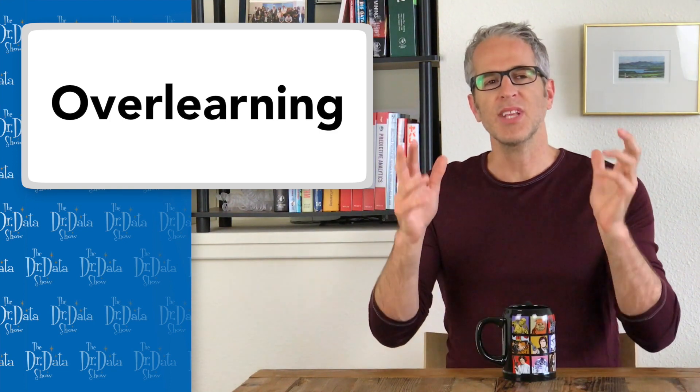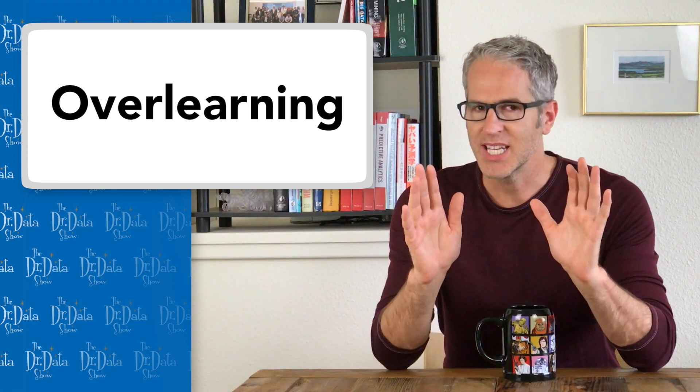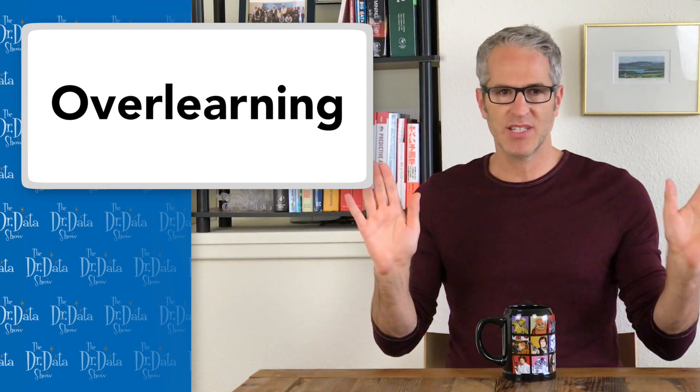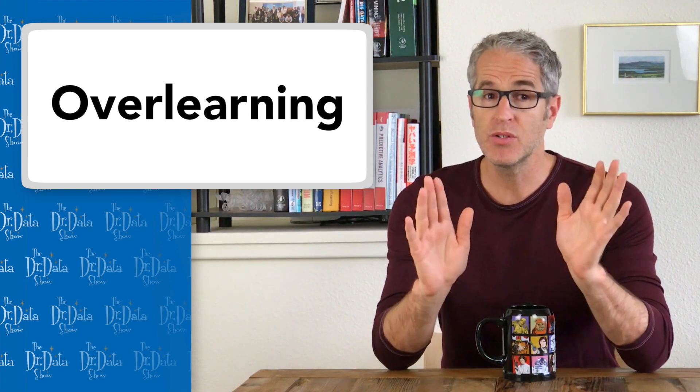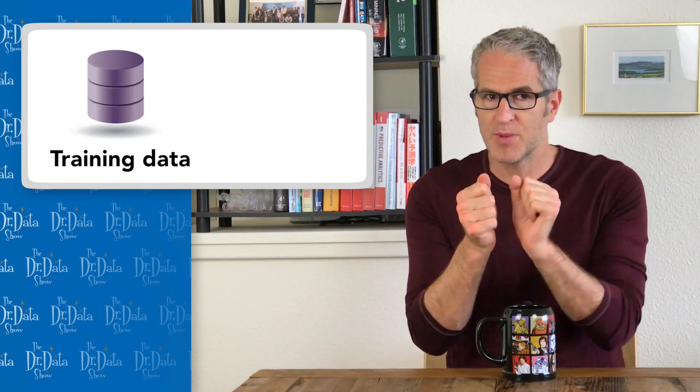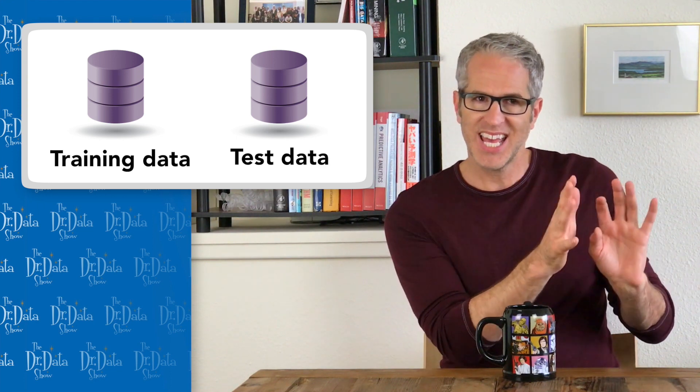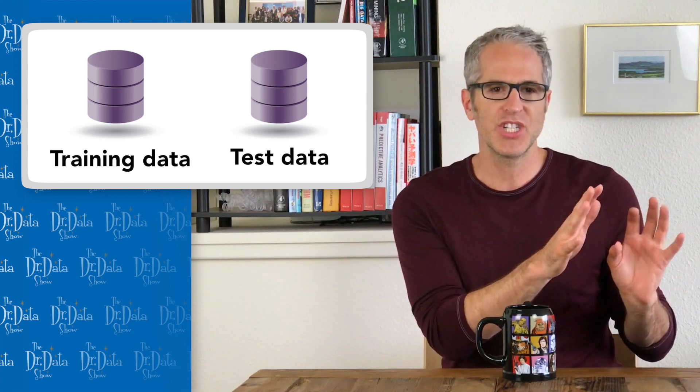So, it turns out that overlearning is actually easy to detect. No fancy math, no advanced science, no deep theory. All you do is hold aside some data for testing. You randomly pull out a sample of data for this purpose and hide it, quarantining it, so the machine learning process can't access it, doesn't see it, and can't possibly cheat.